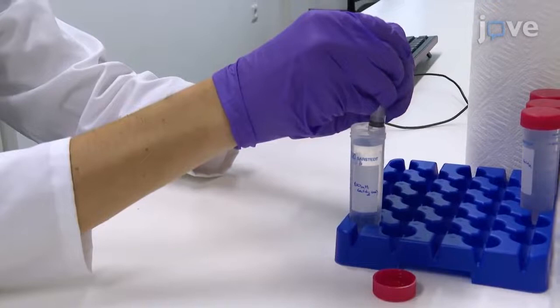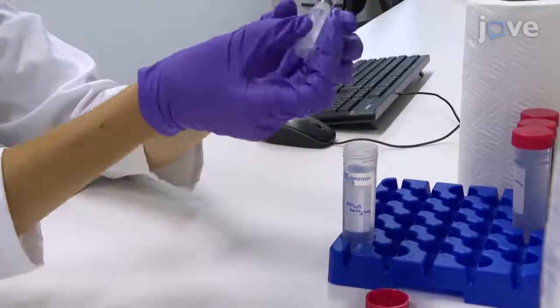Fill a second 5ml syringe equipped with a 27 gauge blunt end needle with freshly prepared crosslinking solution.